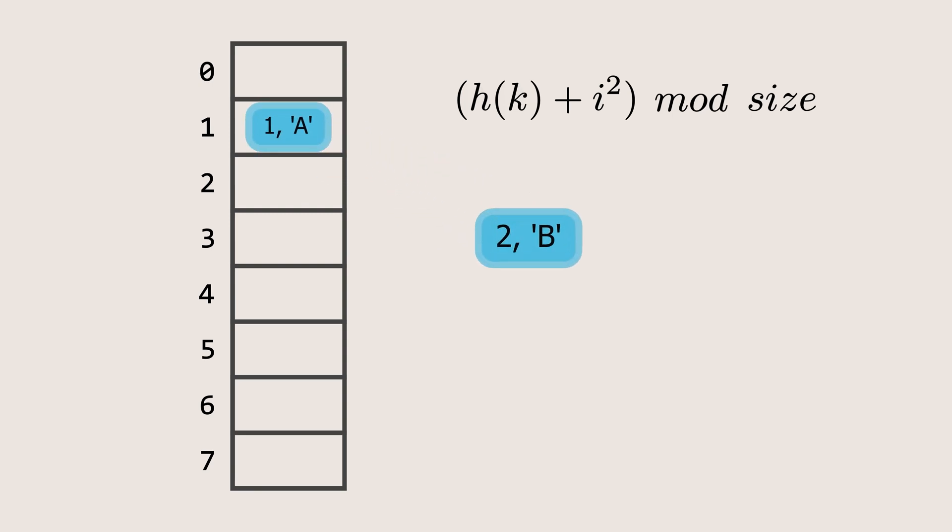And the next element with the key 2 will go to index 2. Now let's insert the element with the key 9. The hash output would be 1, but index 1 is already occupied. So we apply the formula to find the next available slot. Using the formula, we take the hash value 1 and the variable i equals 1. Substituting into the formula gives the result 2. But index 2 is also occupied. In the next iteration, we increase i to 2 and calculate again. This time, the formula gives the result 5. Index 5 is empty, so we insert the element at index 5.